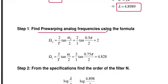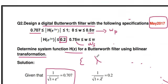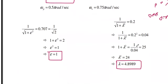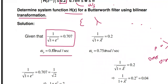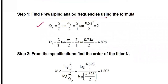Step 1 is to find the pre-warping analog frequencies. The pass band analog frequency: Ωp = (2/T)·tan(ωp/2). Since T is not given, assume T = 1 second. So Ωp = 2·tan(0.5π/2) = 2·tan(π/4) = 2 radians/second. Similarly the stop band: Ωs = 2·tan(0.75π/2) = 2·tan(3π/8) = 4.828 radians/second.